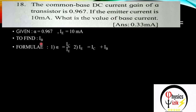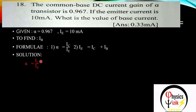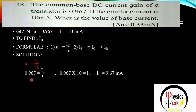We are going to use two formulas. First, alpha = IC / IE — from this we will get the collector current. Then we use IE = IC + IB to find IB. We know IE, we will find IC, and from the second equation we will find IB. So: alpha = IC / IE, that is 0.967 = IC / 10.